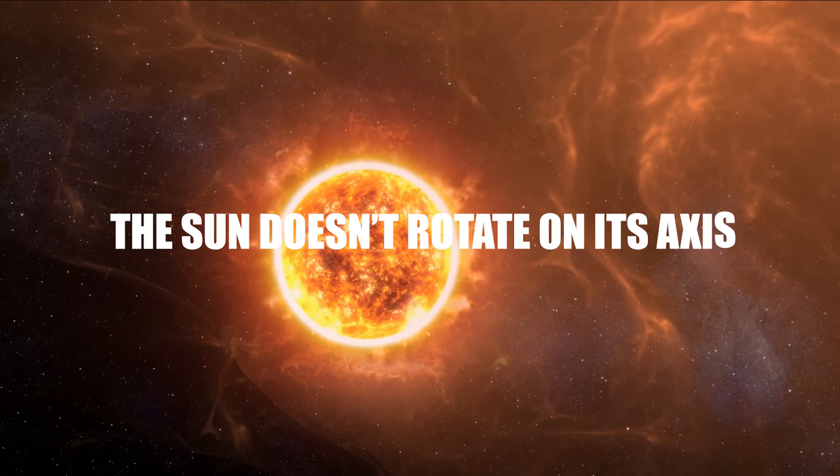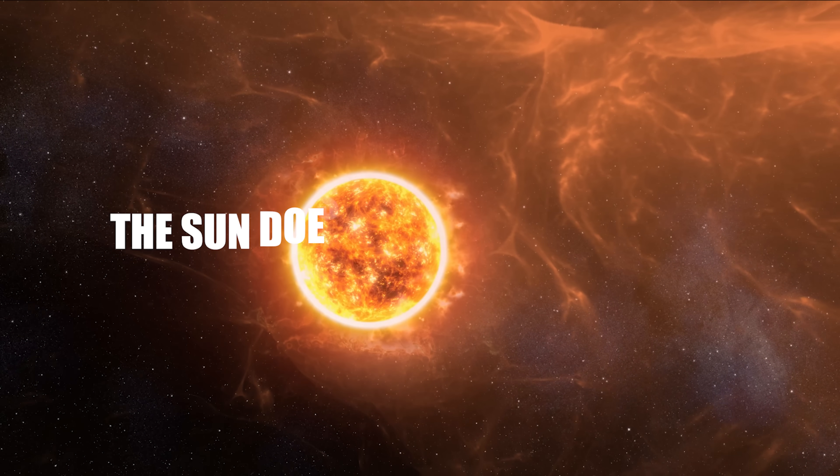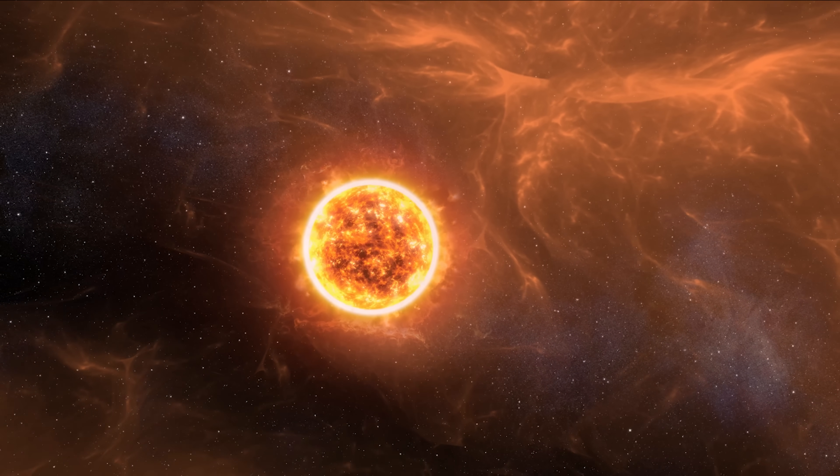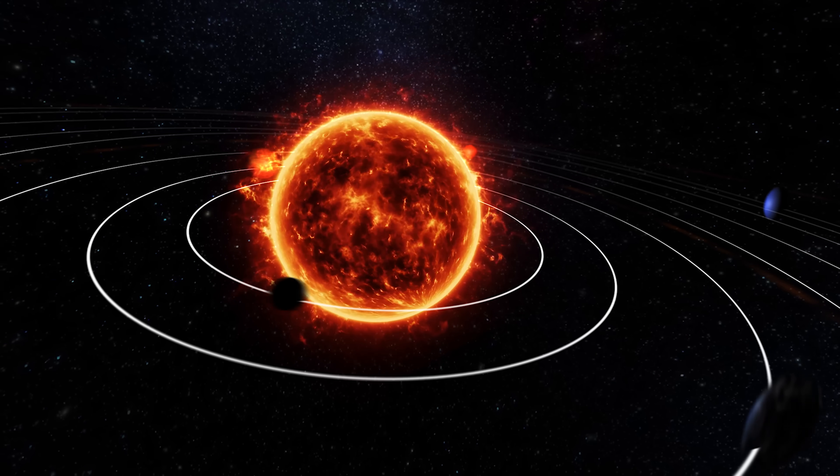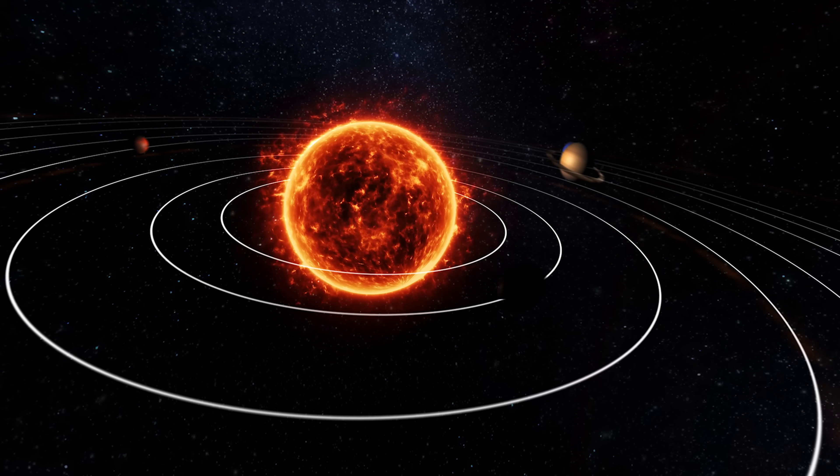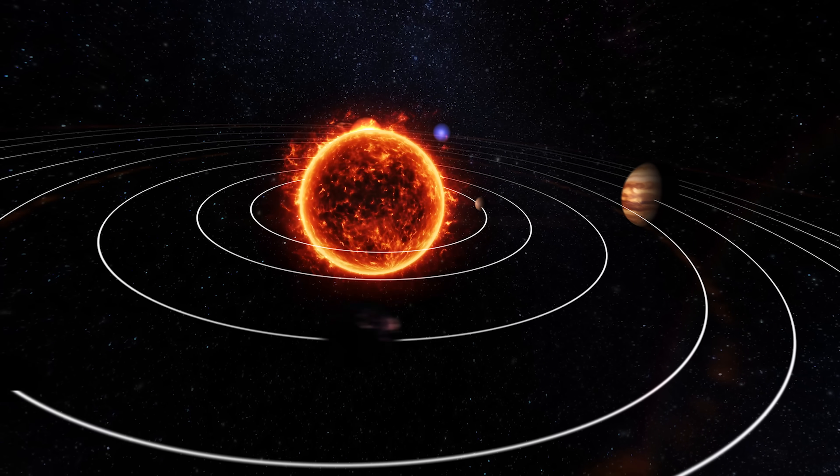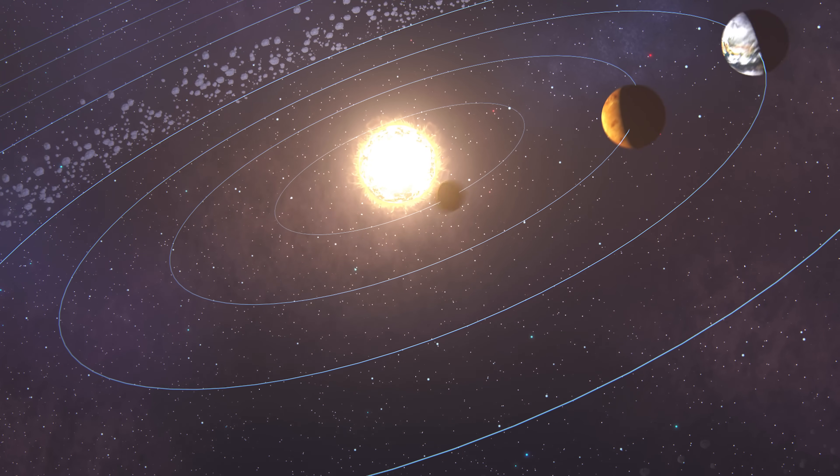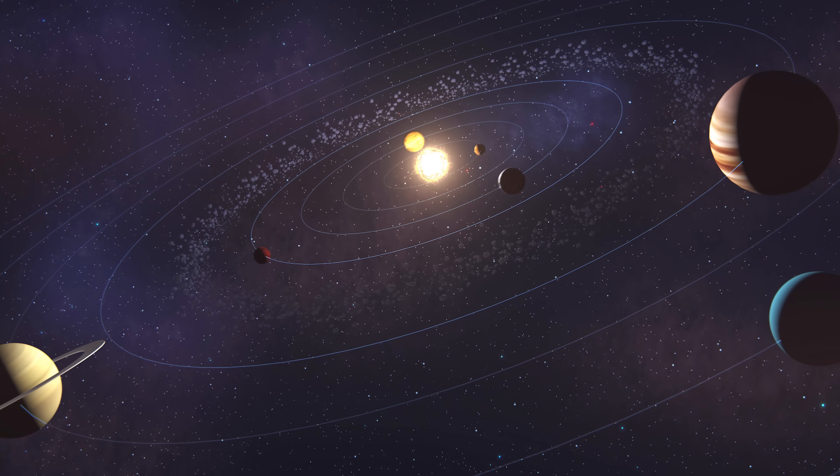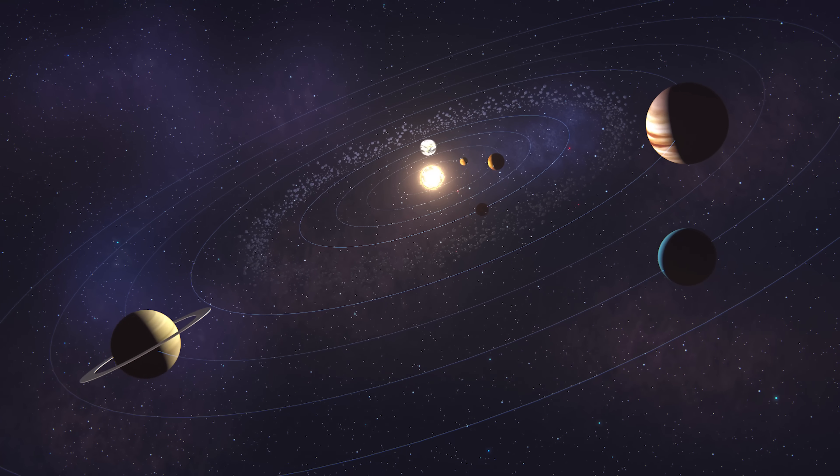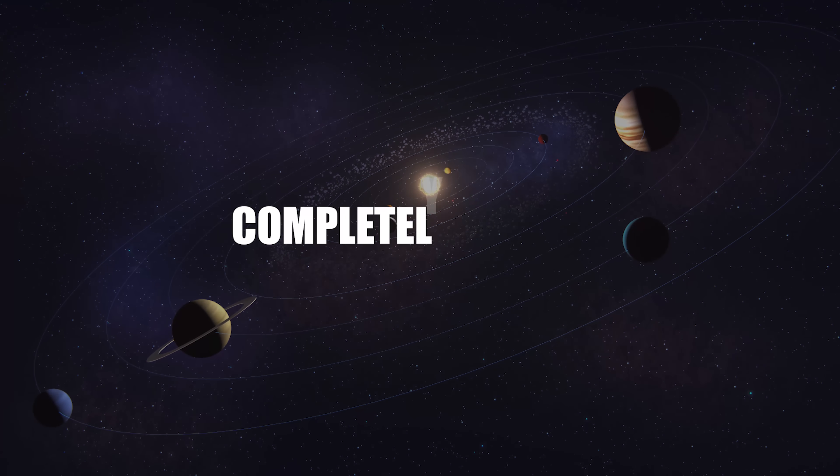The Sun doesn't rotate on its axis. Here's a misconception that seems so obvious it's rarely questioned. The Sun is the fixed center of the solar system, the immobile point around which everything orbits. It's the great stationary star that illuminates the dancing planets. Logical to think it's still like the center pin of a carousel, right? Completely wrong.